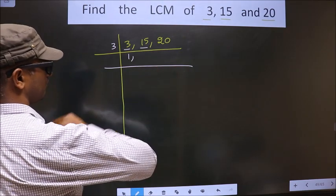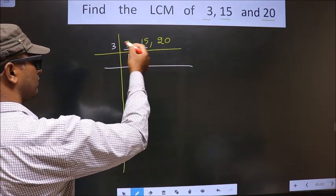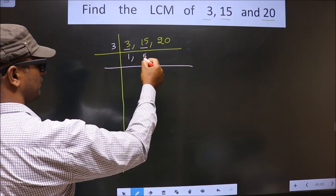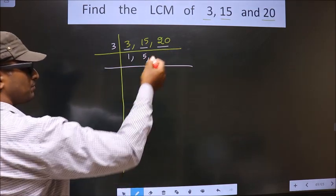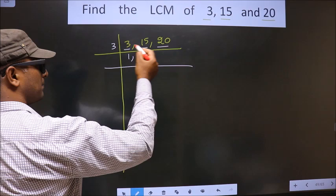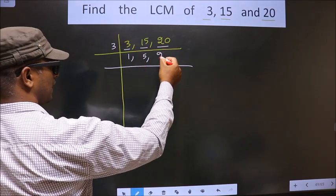Now, the other number is 15. When do we get 15 in 3 table? 3, 5 is 15. The other number is 20. 20 is not divisible by 3. So, you write down as it is.